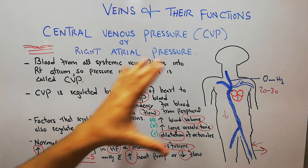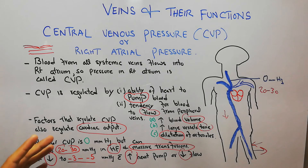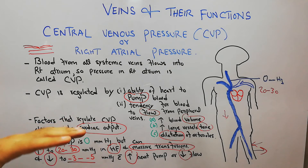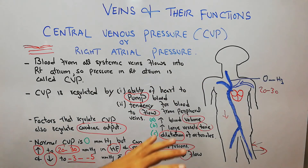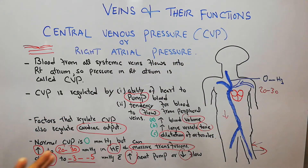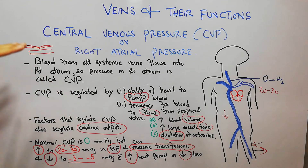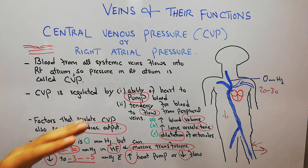CVP or central venous pressure is very important and is measured often in the wards. Almost all critical patients have a CVP measurement, and it gives a lot of information to doctors so they can take steps to correct any pathology that is increasing or decreasing the CVP.